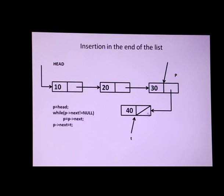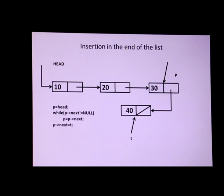We have successfully inserted 40 at the end of the list. After insertion, the new list contains elements 10, 20, 30, and finally 40. That's all for insertion at the end. Today we have seen how to insert a node at the beginning, in the middle, and at the end of a linked list.